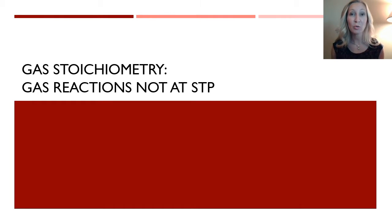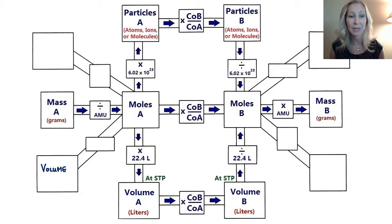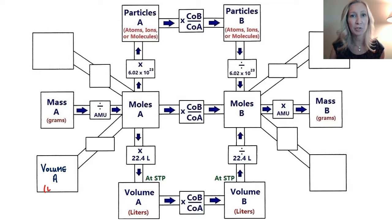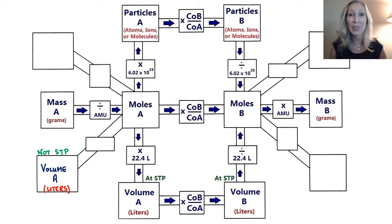In this video we will be looking at gas reactions that do not take place at STP. Let's go back to the mole map — the way we organize all of our information. We're going to add a couple components to it. In the lower left-hand corner we're going to add volume of gas A, measured in liters. This volume of gas will not be at STP, so be sure to denote that.